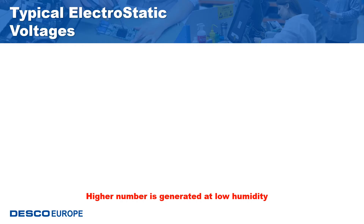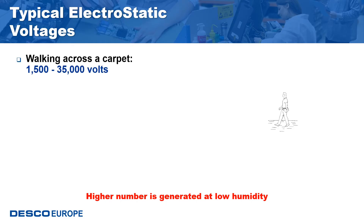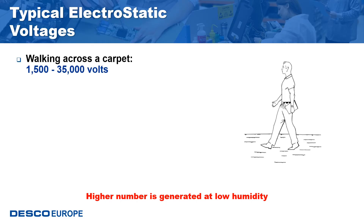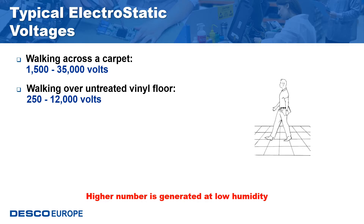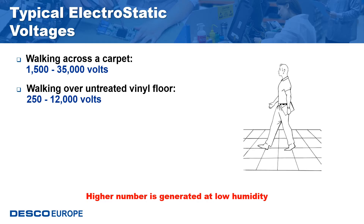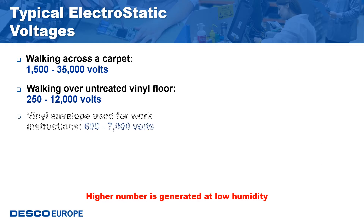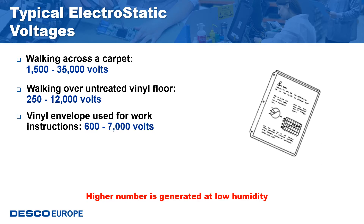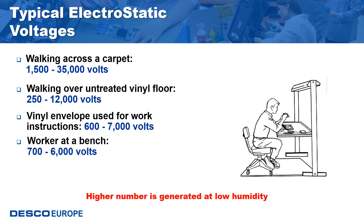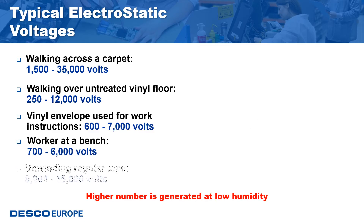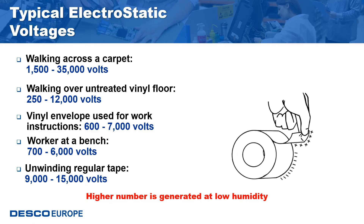Many common activities performed daily may generate charges on your body that are potentially harmful to electronic components. These include walking across a carpet, walking over an untreated vinyl floor, a worker at a bench, or even picking up a common plastic bag from a bench — all of which can result in many thousands of volts.